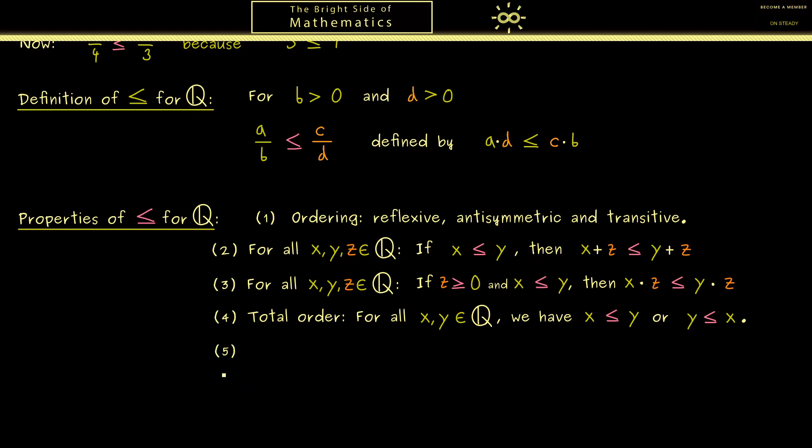The fifth property here is the so-called Archimedean property. Also, this one fits in with our picture of the number line. It tells you that if you take any rational number on the number line, you can just start with 0 and a small step and just adding to exceed this point.